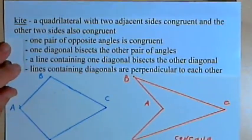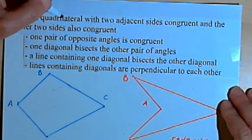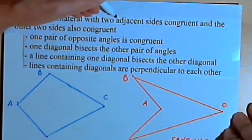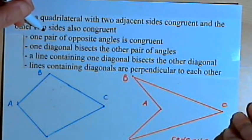So let's start with a definition. My definition says that a kite is a quadrilateral, so it's a four-sided figure, with two adjacent sides that are congruent and the other two sides also congruent.